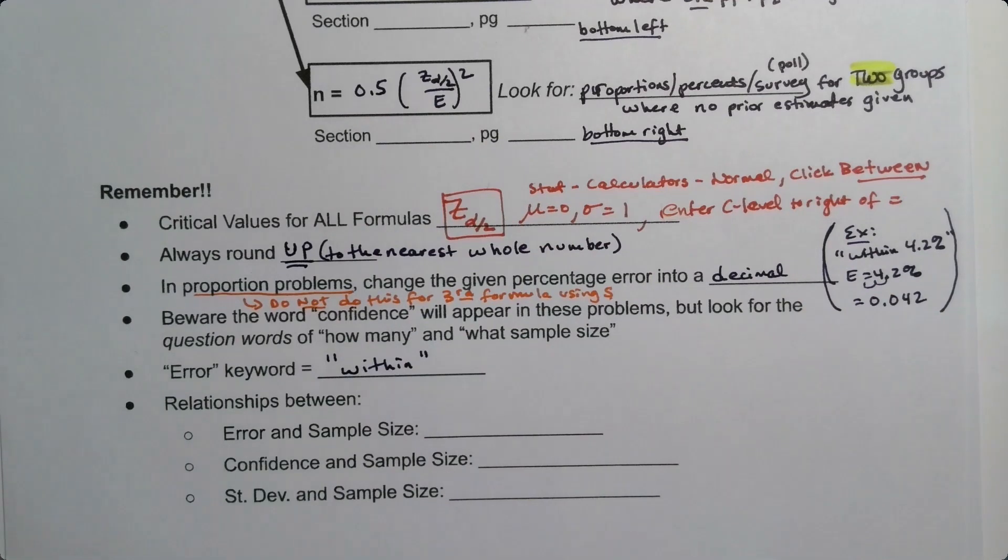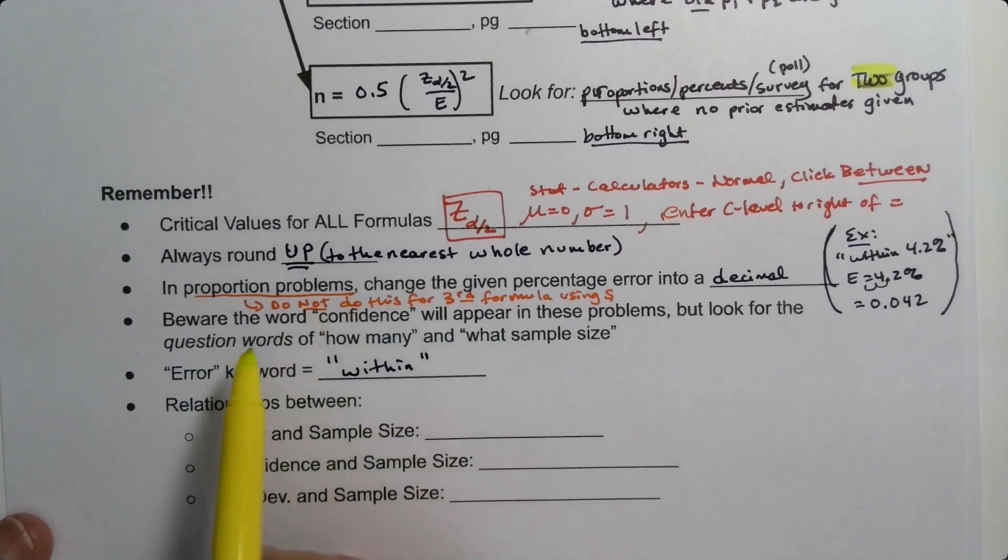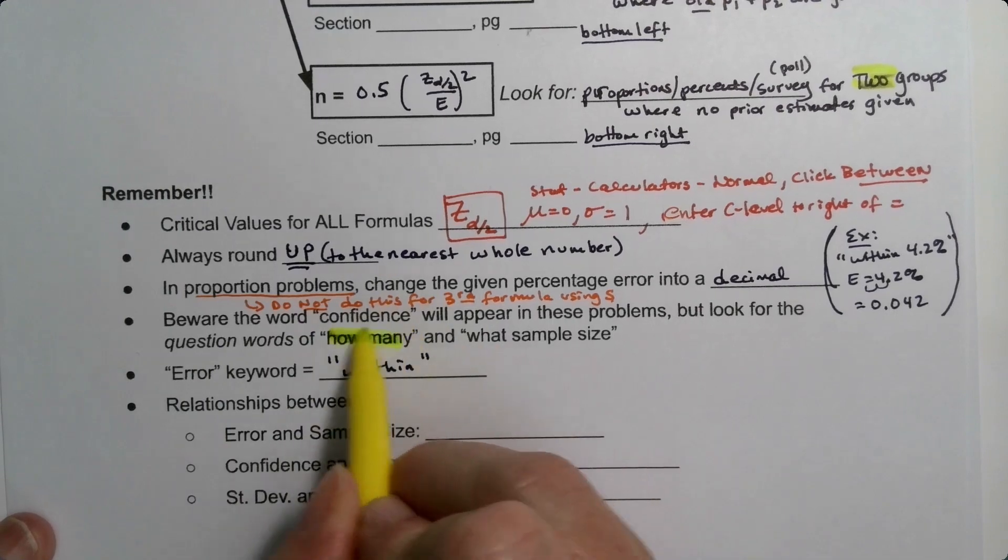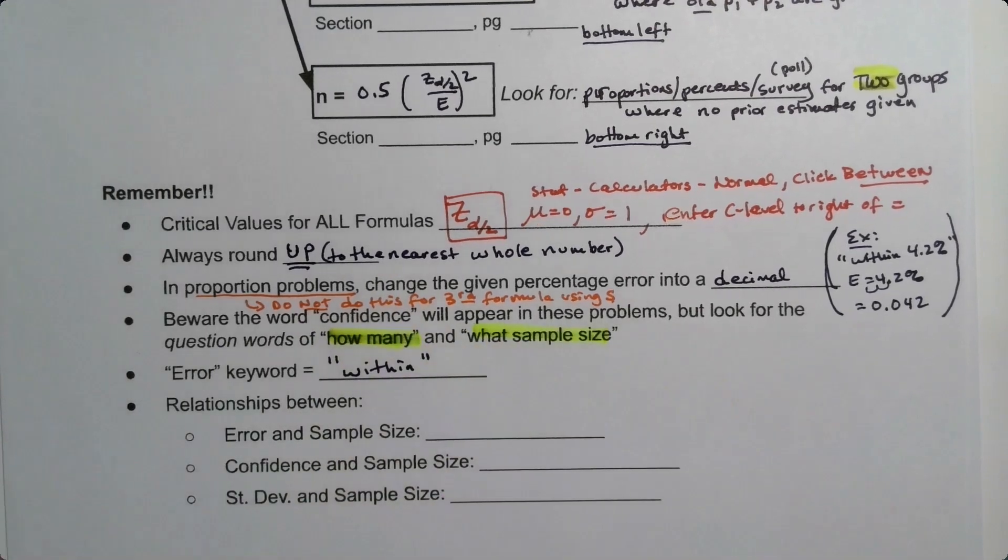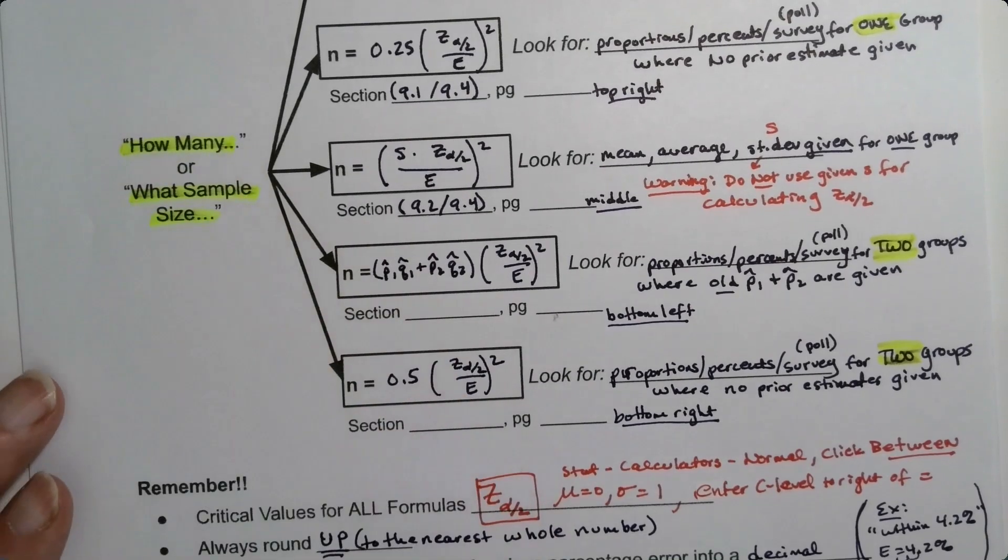Now, one other thing that's weird about sample size questions, and it can make them hard to spot on the final, is when you know that you're doing one. I think that's one of the keys. You want to be aware, because the word confidence and constructing a confidence interval will appear in these problems. But it doesn't want you to make a confidence interval. It wants to know how many, what sample size. And I wrote those up here.